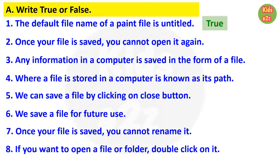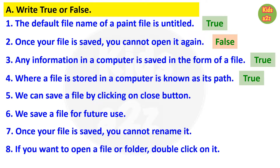Question 3: any information in a computer is saved in the form of a file — true. Question 4: where a file is stored in a computer is known as its path — also true. Question 5: we can save a file by clicking on the close button — false.